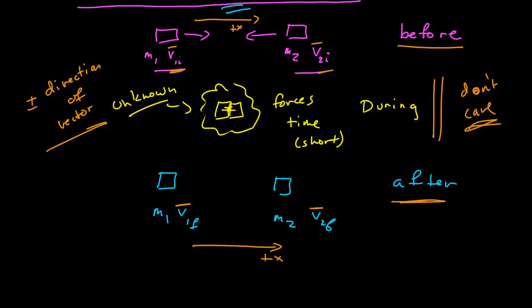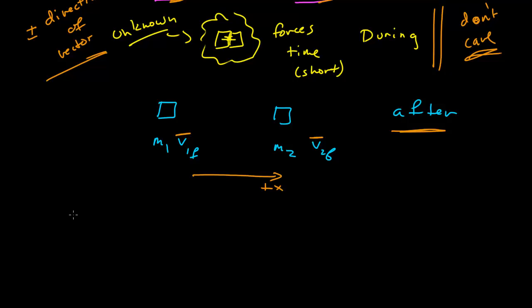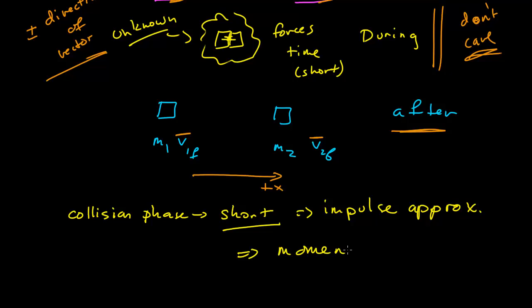So how can we do this? So the first thing that we often say about this during, sort of that helps us with this, is that the collision phase is very short. Which means we're always going to be working in the impulse approximation. And so in the impulse approximation, then, momentum is conserved.